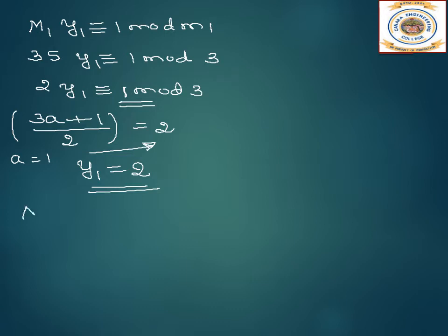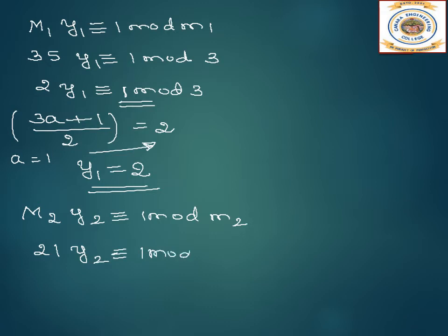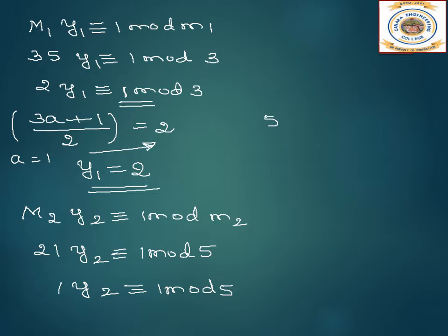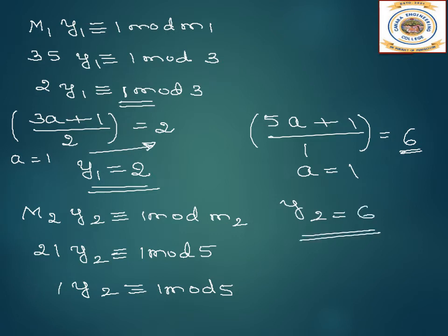Next we find y2. M2·y2 is congruent to 1 mod m2, so 21·y2 ≡ 1 mod 5. Since 21 is greater than 5, we do 21 mod 5 which gives remainder 1. So 1·y2 ≡ 1 mod 5. Using the formula (5a + 1) / 1, when a equals 1 we get 6. Therefore y2 equals 6. Verifying: 1 into 6 is 6, and 6 mod 5 is 1.